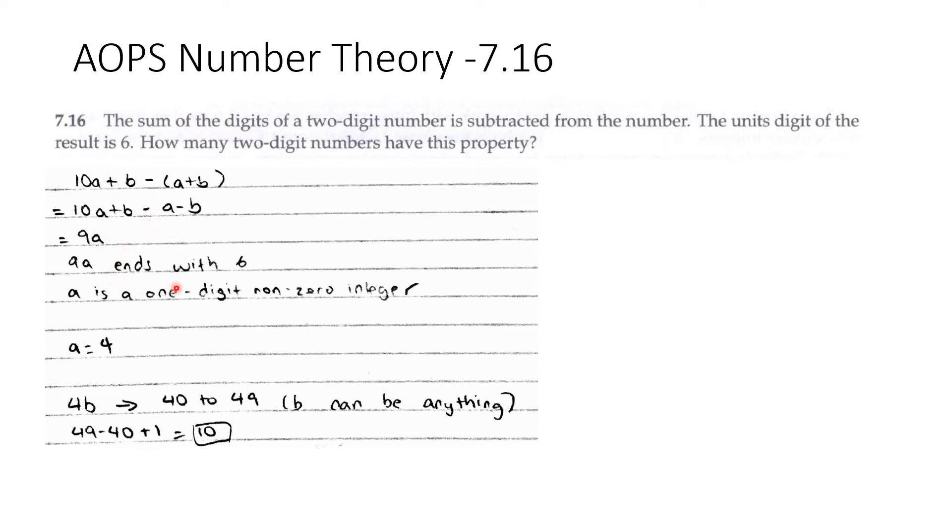So 9a ends with a 6. And a is also a one-digit non-zero integer since a is the tens digit. So if 9a ends with a 6, the only possible number for a is 4.